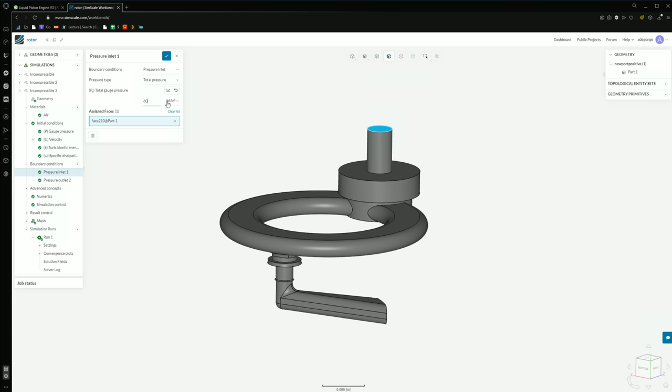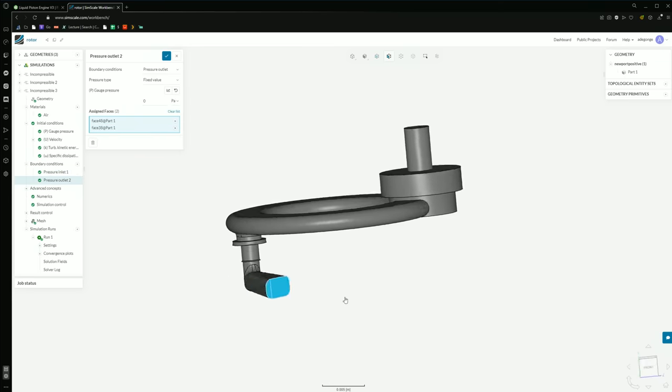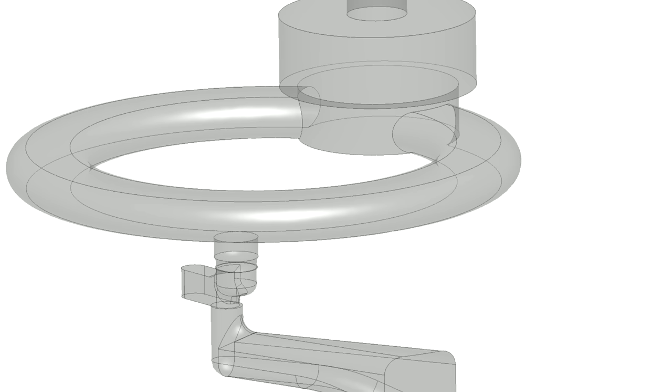But now the good stuff. I set up the positives in SimScale to have a 60 psi 3mm diameter input, and a 0 psi output to simulate atmosphere. Then I ran both simulations, and the result? More beautiful animations.